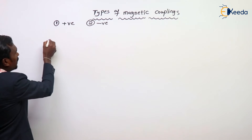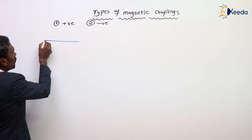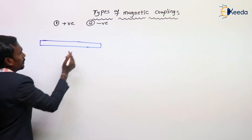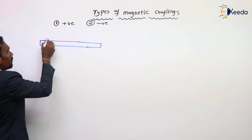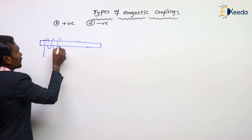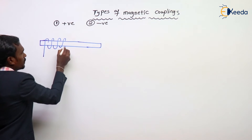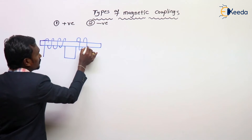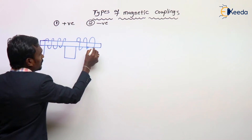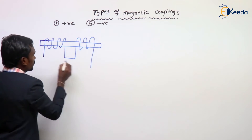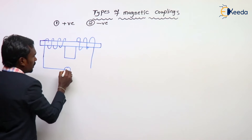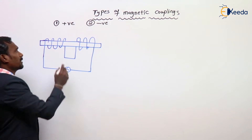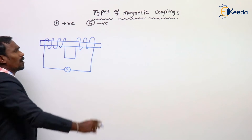I will give you some examples. These are two windings. Let's see the winding pattern. This is my winding pattern. This is coil A and this is coil B.